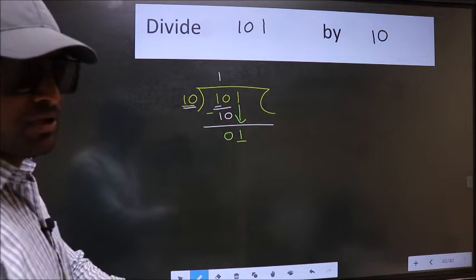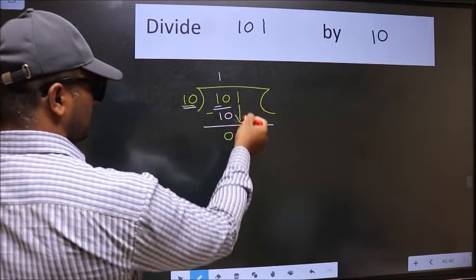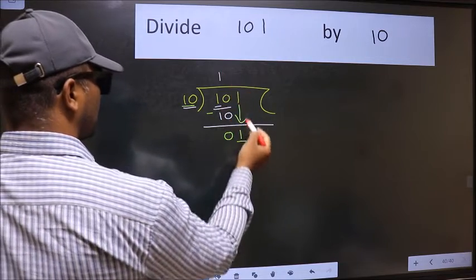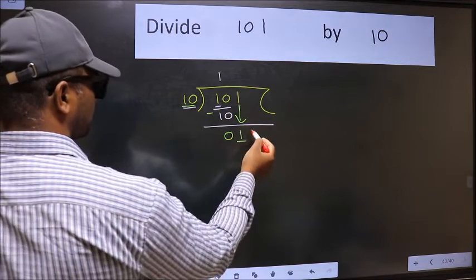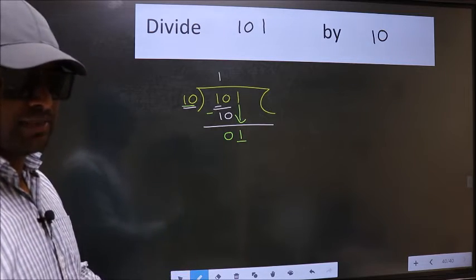Why is it wrong? Because just now you brought this number down, and in the same step you want to put dot, take 0. Which is wrong. I repeat.